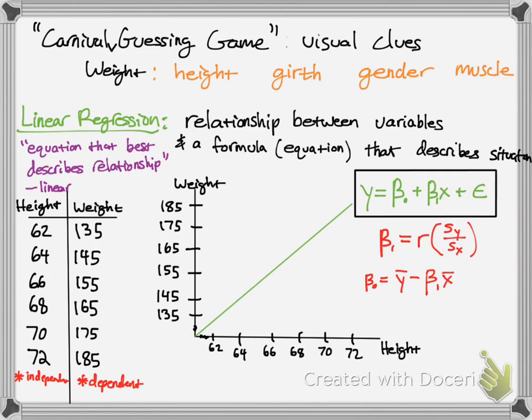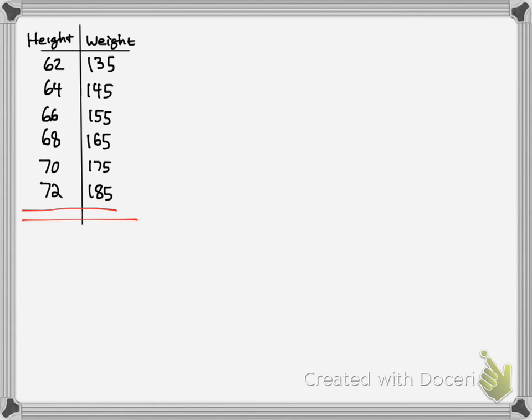So again, beta1 is your slope, beta naught is your y intercept. So now we're going to take a look at this over here.